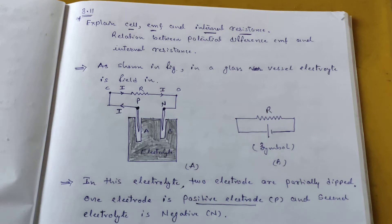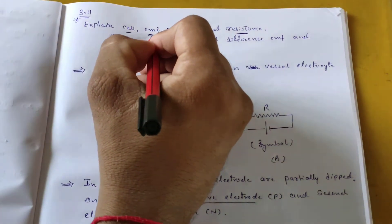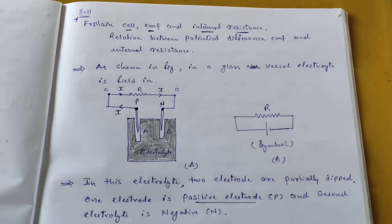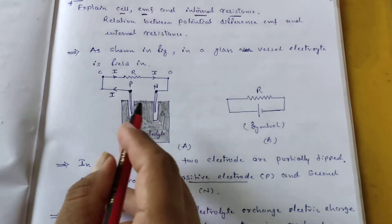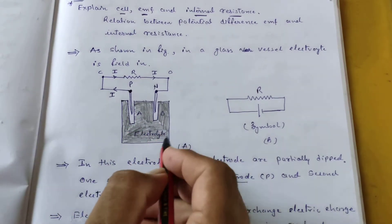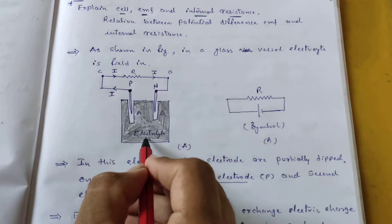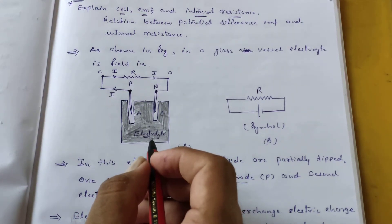In that cell we have one simple force, and that force we are going to see here. EMF stands for electromotive force. To understand it, let's consider one vessel. In the vessel we have one chemical solution, which in physics is considered as an electrolyte.